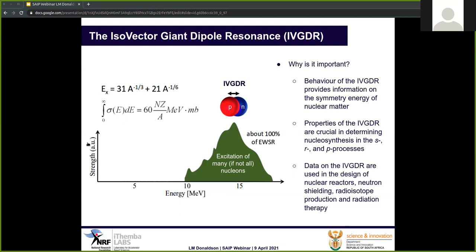The location and strength of the isovector giant dipole resonance are crucial in determining nucleosynthesis in the S, R, and P processes. Data on photoabsorption cross-sections are used in the design of nuclear reactors, neutron shielding, radioisotope reduction from electron accelerators, and radiation therapy. Accurate photoabsorption data are critical for the entire nuclear data community. In fact, there is an ongoing project led by the International Atomic Energy Agency to generate a new database for strength functions and to update existing photonuclear data.